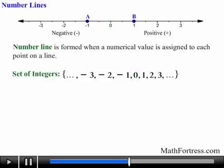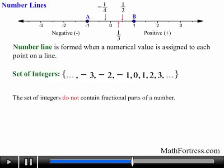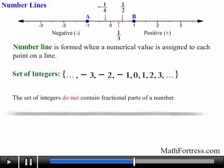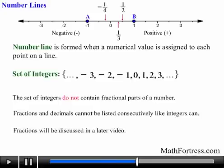Any numbers between integers like 1/2, 1/3, and negative 1/4 are not considered integers. They are called fractions. Remember, the set of integers do not contain fractional parts of a number. Moreover, fractions and decimals cannot be listed consecutively like integers can. Fractions will be discussed in a later video.